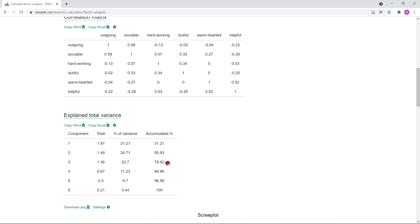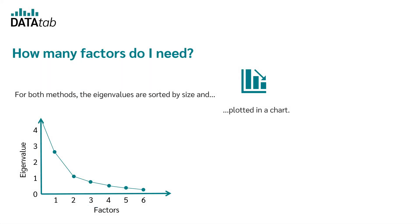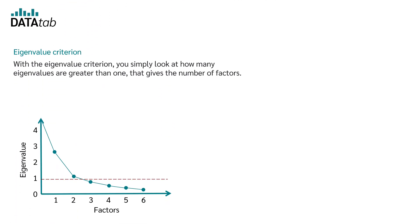But now comes the big question: how many factors do we need? Factor analysis does not give you a clear answer, but there are two common methods. For both methods, the eigenvalues are sorted by size and plotted on a graph — the x-axis shows the number of factors 1 to 6, and the y-axis shows the eigenvalues. With the eigenvalue criterion, you simply look at how many eigenvalues are greater than 1, which gives you the number of factors. In this illustrative case, two factors are greater than 1, so the number of factors would be 2.